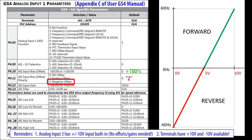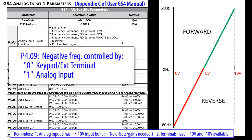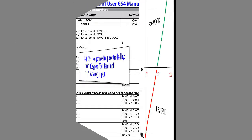That's so if you have a PLC that can only write positive values, you can invert them here. Finally, in parameter 409, we tell the drive to use the analog input for forward and reverse instead of the keypad or external terminal.